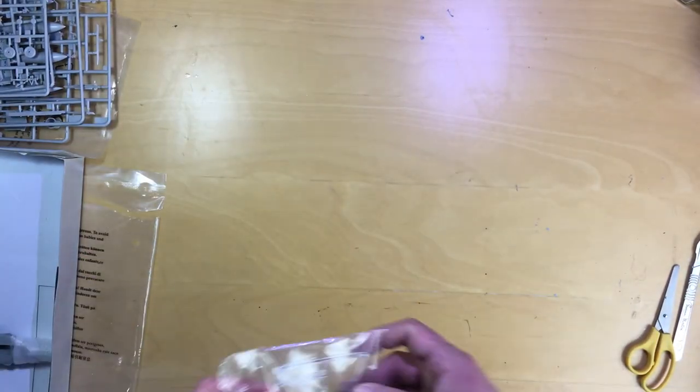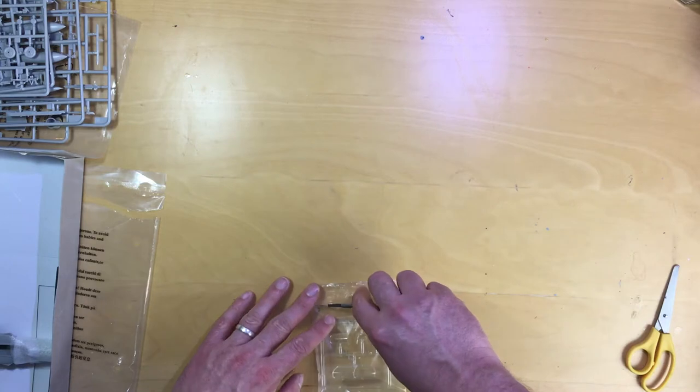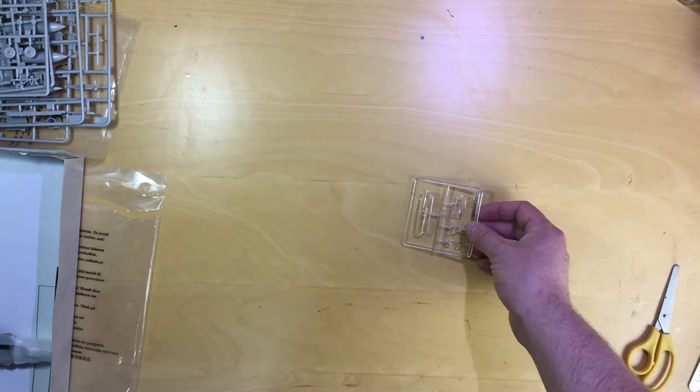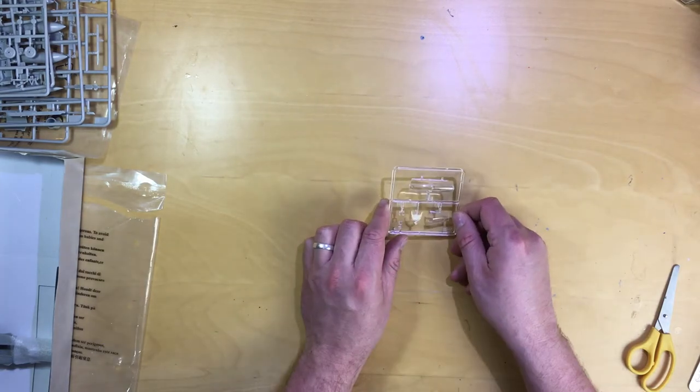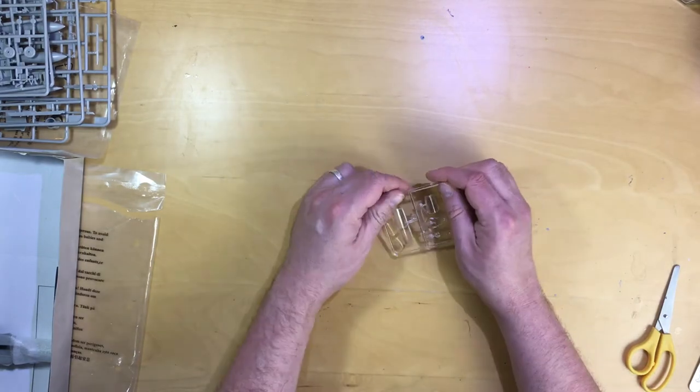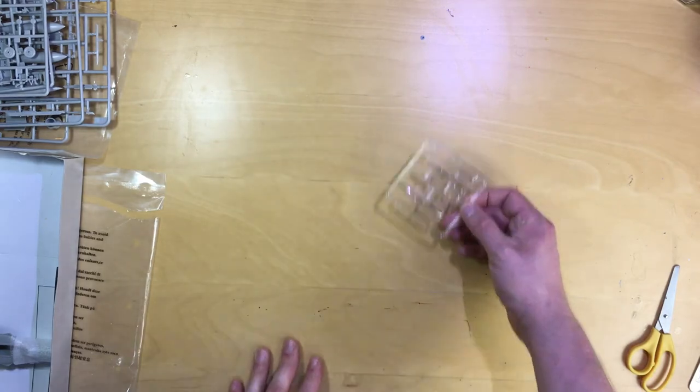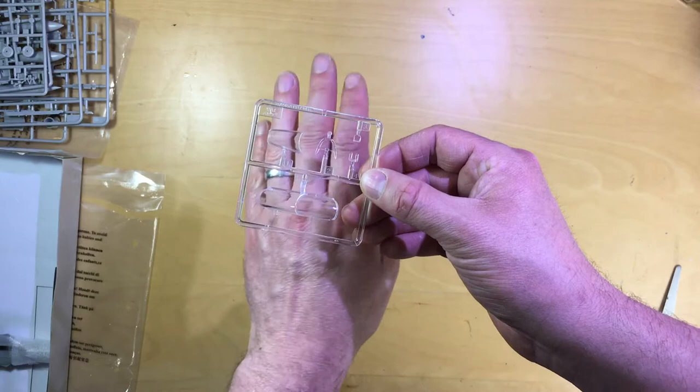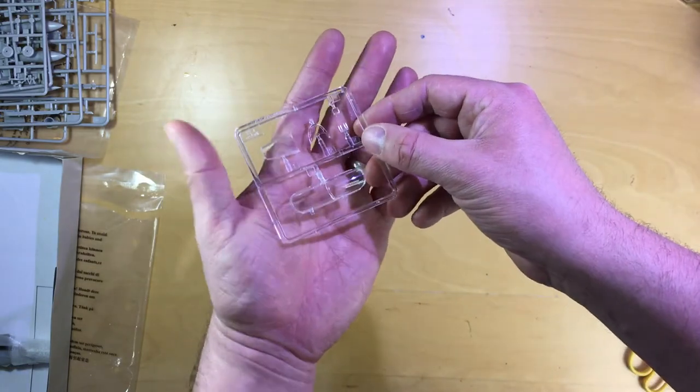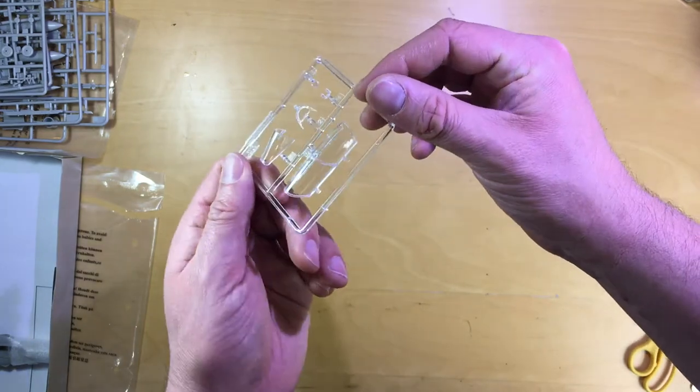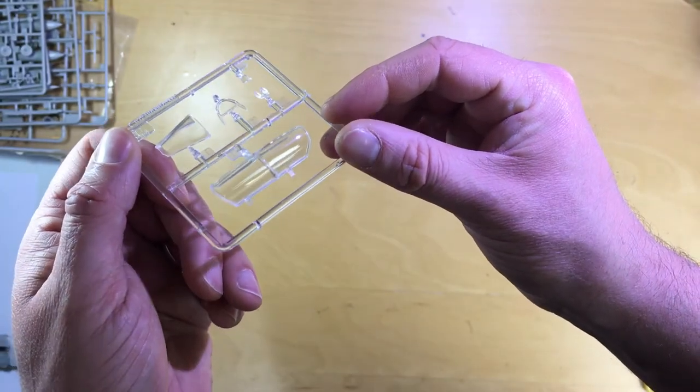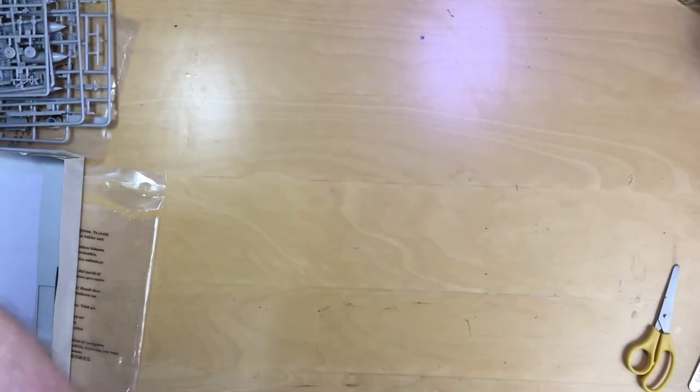The last sprue bag to open is the clear parts. They look very nice, very clear, nice and transparent. I'm not sure about distortion on them, but they do look rather nice. I don't even think they're going to need a dip in clear, I think they're absolutely fine. That's a lovely little sprue, I'm going to put that aside so I don't scratch it.